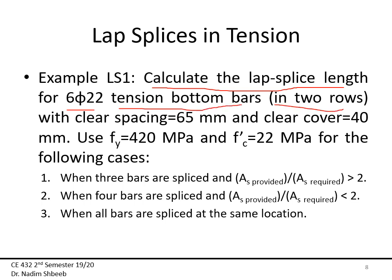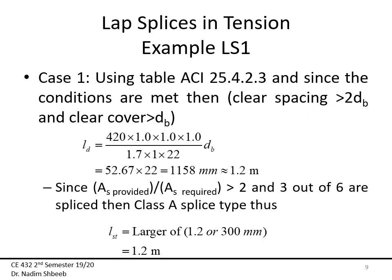Example: calculate the lap splice length for six 20mm tension bottom bars in two rows. Clear spacing is 65 mm, clear cover is 40 mm, fy = 420 MPa, f'c = 22 MPa. Three cases: Case 1 — splice three of six bars with As,provided/As,required > 2; Case 2 — splice four bars with ratio < 2; Case 3 — all six bars spliced at the same location.